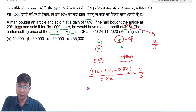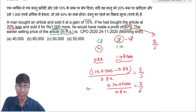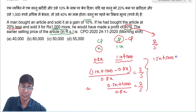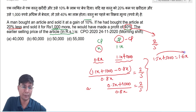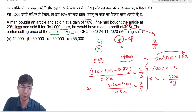Simplifying the numerator: 1.1x − 0.8x = 0.3x, so (0.3x + 1000) / 0.8x = 2/5. Cross-multiplying gives 1.5x + 5000 = 1.6x. Therefore 5000 = 0.1x, and dividing both sides by 0.1 (which is 1/10) gives x = 50,000.